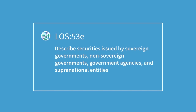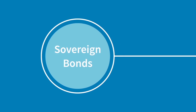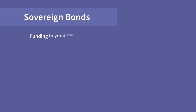Describe securities issued by sovereign governments, non-sovereign governments, government agencies, and supranational entities. First we have sovereign bonds, bonds issued by national governments. These bonds are issued to meet the spending requirements of a national government when tax revenues are insufficient.